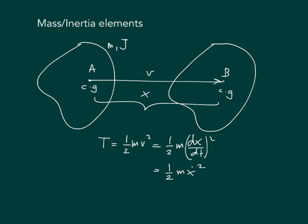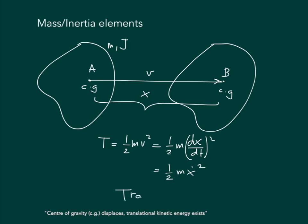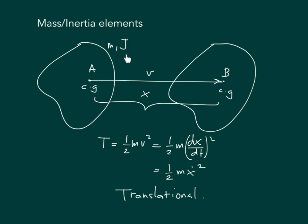There are two things to note here. First, the motion involves the displacement of the center of gravity from A to B. So if the center of gravity is displaced by x, we straightforwardly have kinetic energy of half m x-dot squared. Second, in this case there are no rotations — the body moves only in translational motion from A to B. Because there is no rotation, we do not include the second mass moment of inertia in the kinetic energy.